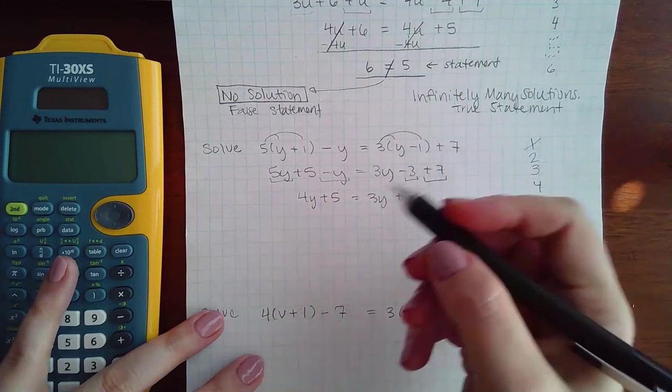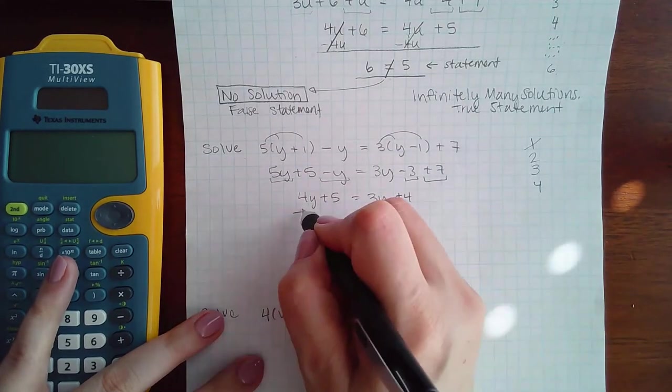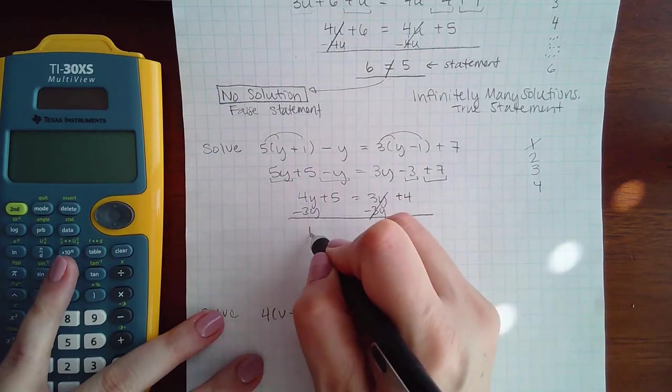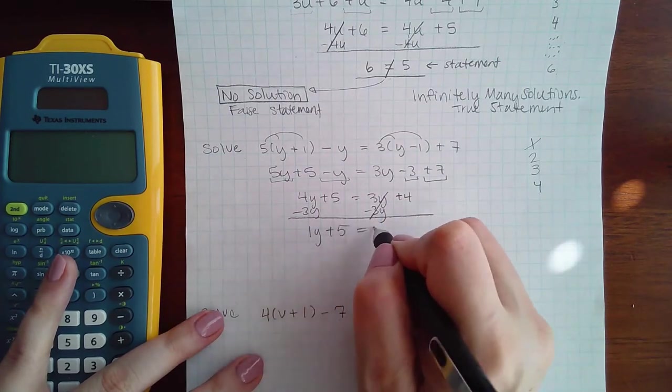Then step four, move the variables over. So I have 1y plus 5 equal to 4.